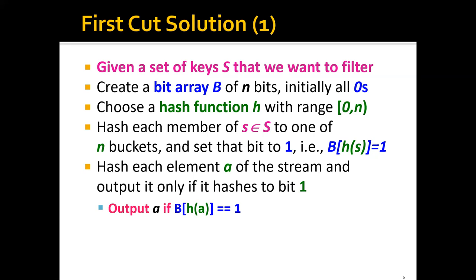And after doing this, then for each new element coming from the stream, we can hash this element a and output it only if it hashes to bit 1. So we will output a only if B[h(a)] equals 1. Otherwise, we'll just drop this element.